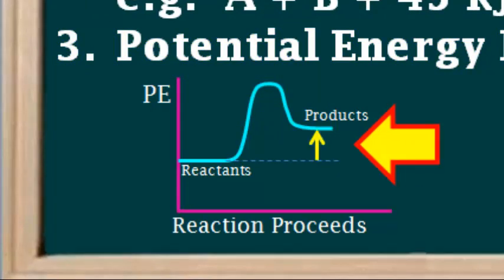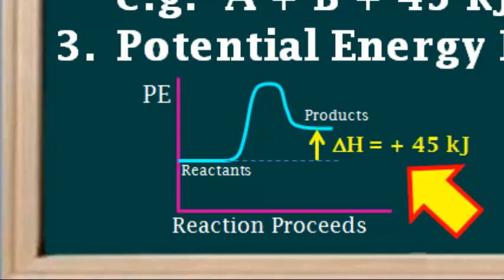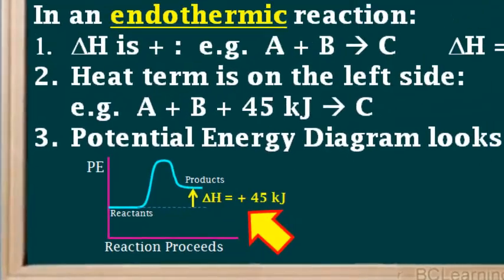The potential energy diagram for an endothermic reaction looks like this. The energy difference between the reactants and the products is delta H. We'll use this example in which delta H is positive 45 kilojoules. Notice when delta H is positive, the energy of the products is higher than that of the reactants.